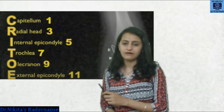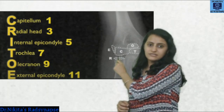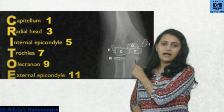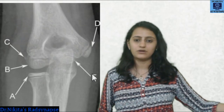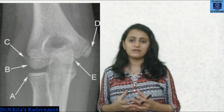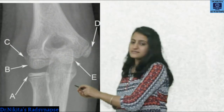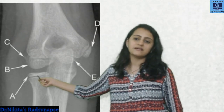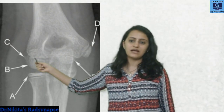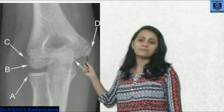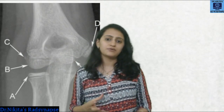On the radiograph, the radial head is identified first, and above it is the capitulum. The lateral epicondyle is close to the radius side. The trochlea and olecranon process are also visible, along with the medial epicondyle on the ulnar side. If asked to identify structures labeled A through E on an exam radiograph: A is the radial head, B is the capitulum, C is the lateral epicondyle, D is the medial epicondyle, and E is the trochlea.